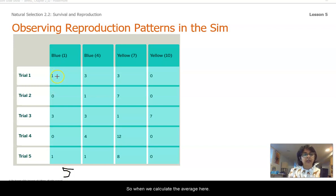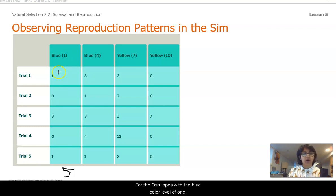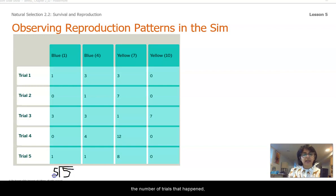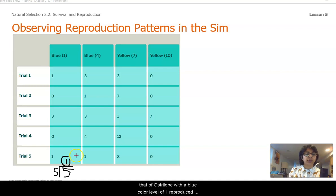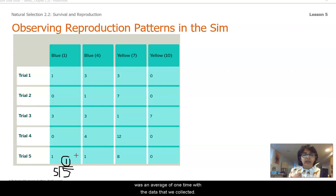When we calculate the average for the Australopes with a blue color level of one, we are going to count how many times they reproduce. That was a total of five, and we're going to divide that by the number of trials that happened, which was five. The average number of times that an Australopes with a blue color level of one reproduced was an average of one time with the data that we collected.